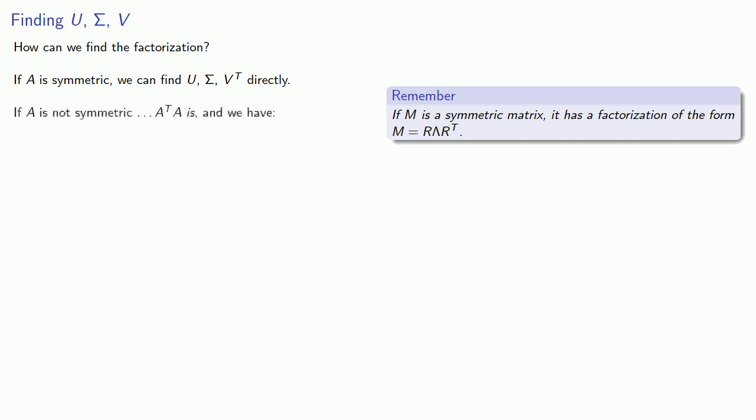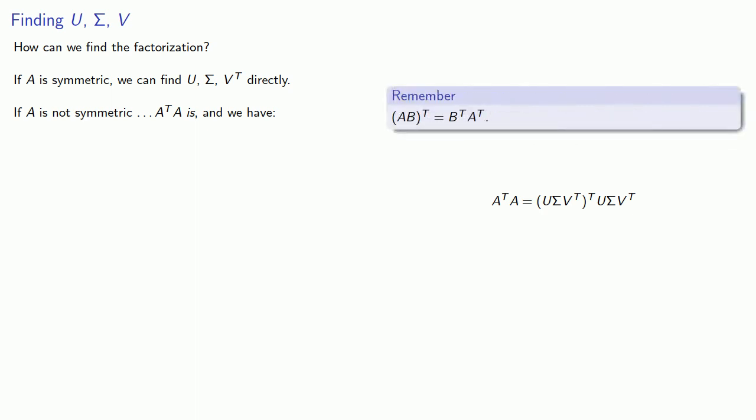If A is not symmetric, well, we know that A^T A is. And A^T A will be... Now remember, the transpose of a product is the product of the transposes taken in the reverse order. So we can rearrange this.